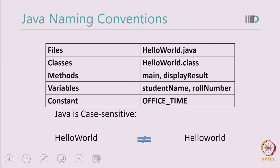Java uses a naming convention that makes it easy for other programmers to understand your program. In Java, each class is named with a capital starting letter, and every subsequent word also starts with a capital letter. So if I declare a class called 'HelloWorld', I use H and W as capitals. All methods in Java start with a small letter, but if a method name is a combination of words, the second word starts with a capital letter — for example, 'main' is all lowercase, while 'displayResult' starts with a lowercase d but has a capital R. Variables follow the same convention as methods, and constants use all capitals.